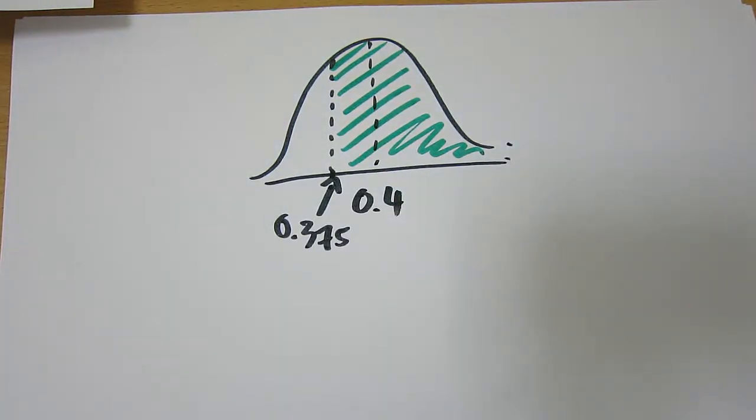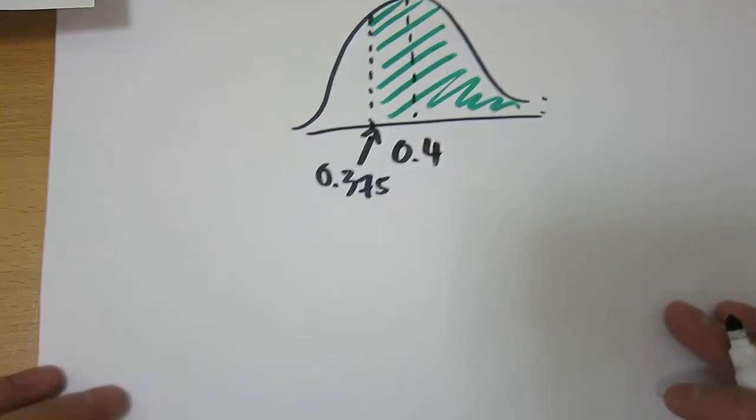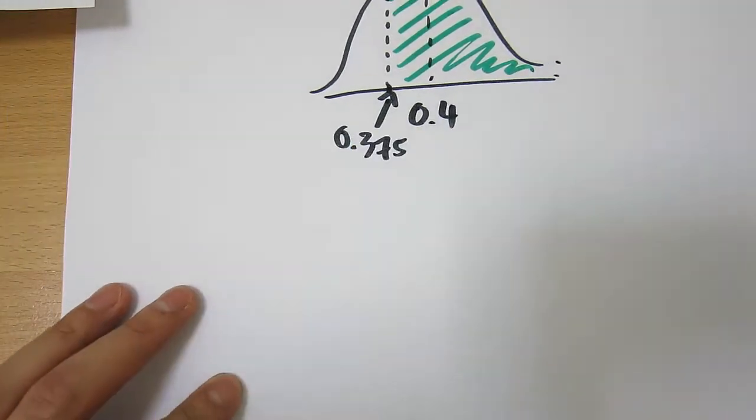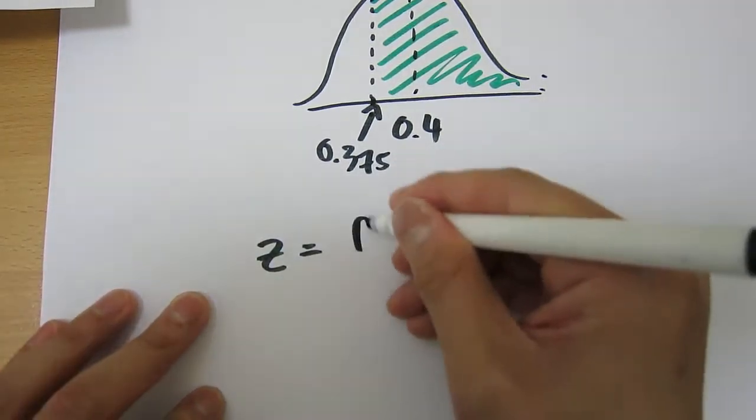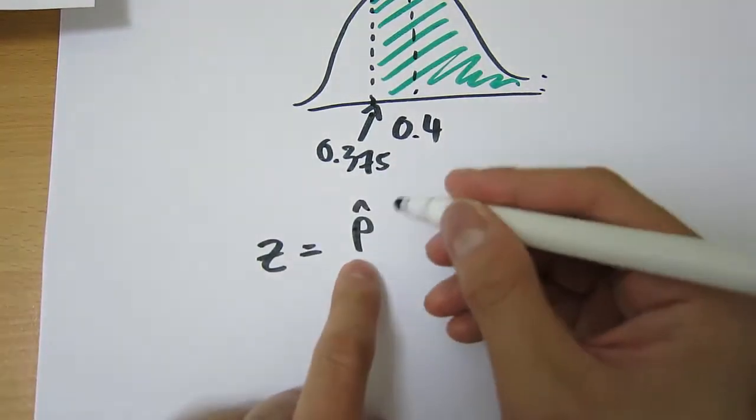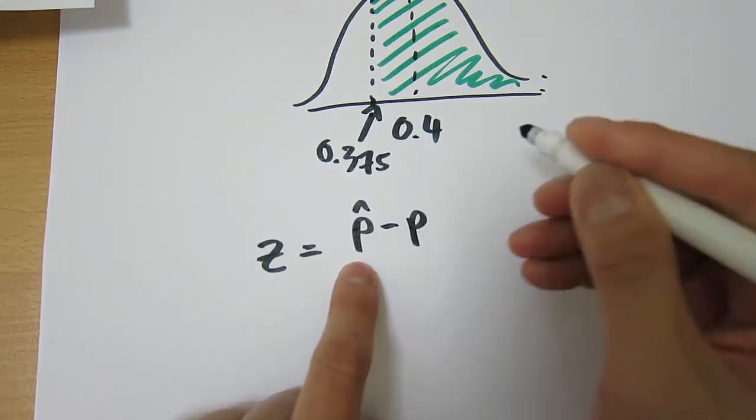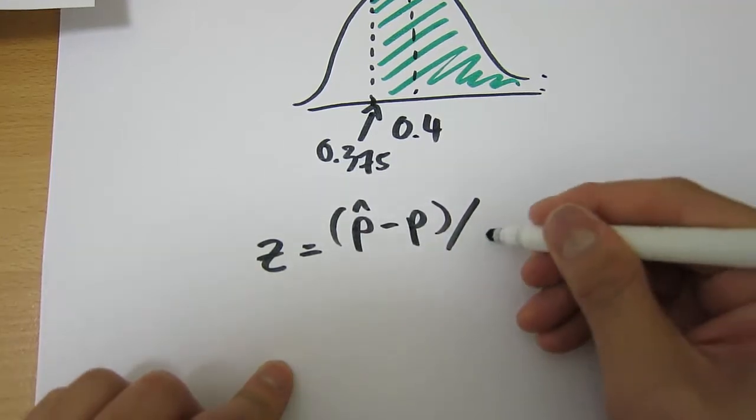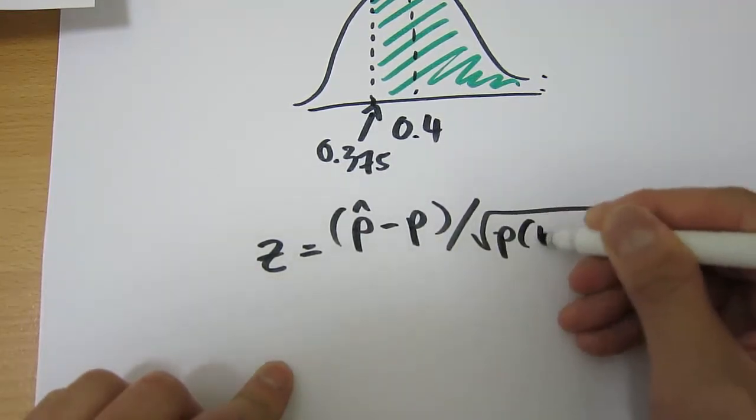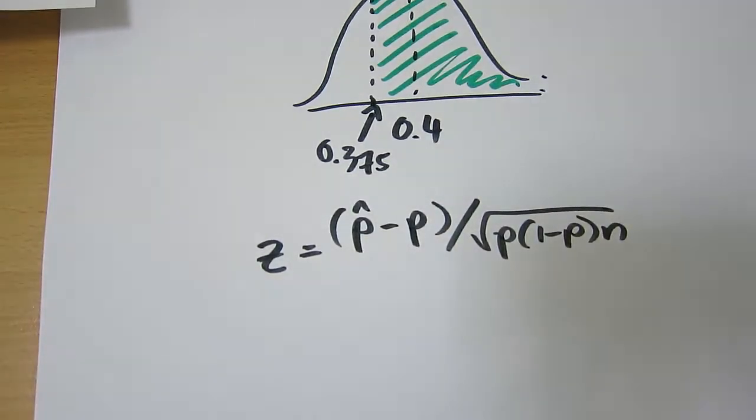Now before we use our standard normal distribution tables, we have to standardize. To standardize using proportions, it follows this formula: P hat minus P, divided by the square root of P times (1 minus P) over N. P hat is our sample mean, P is our population mean.